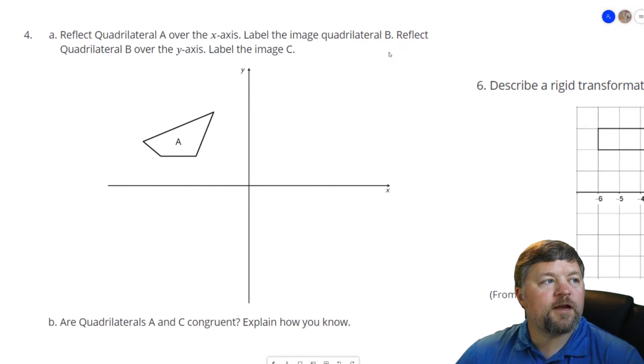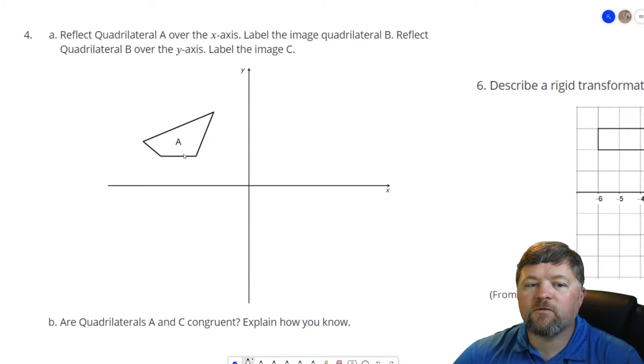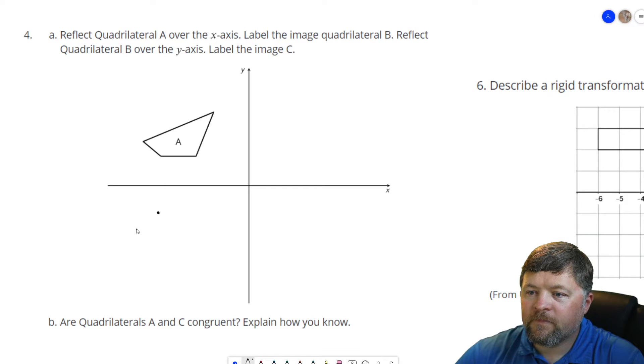Question four. Reflect quadrilateral A over the x-axis. Label the image quadrilateral B. So first we're going to reflect this over the x-axis. This is the x-axis which means we want to go the same distance perpendicular. So that point would be there, this point would be here, this point would be here, and this point would be here.